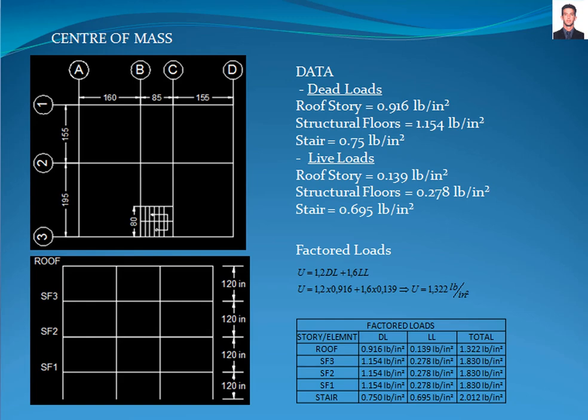In this example, we are going to use a dead load for roof stories of 0.916 pounds per square inch, for structural floors 3, 2, and 1, 1.154 pounds per square inch, and for stairs 0.75 pounds per square inch.